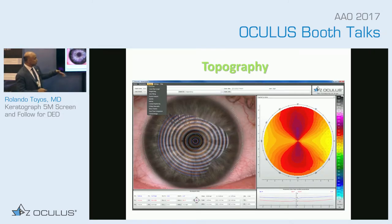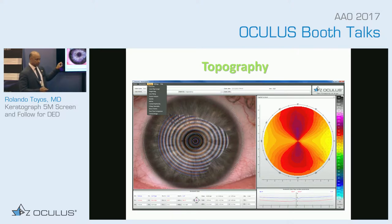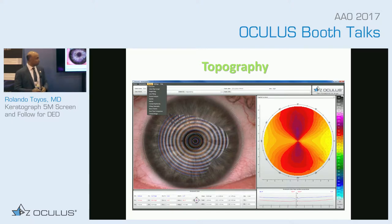You can use it for topography, and the non-invasive tear breakup time comes from these Placido discs. With the Placido rings you can actually see where the rings start to fade as a patient keeps their eye open — that's the non-invasive part.